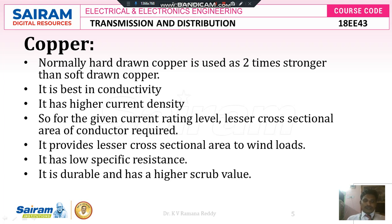Copper has higher current density, meaning it can transfer a high amount of current. For a given current rating, a lesser cross-sectional area of conductor is required, which also provides less exposure to wind loads. Copper has low specific resistance — from the formula R = ρL/A, the value of ρ is very low for copper. It is also durable and has a high scrap value, meaning it has higher reliability and can withstand mechanical stress during installation and connections.